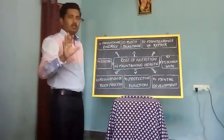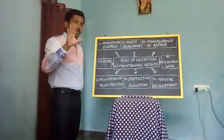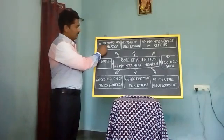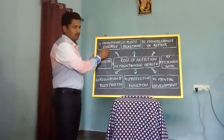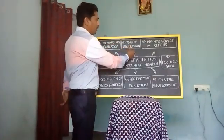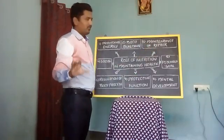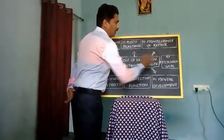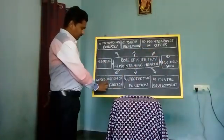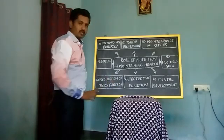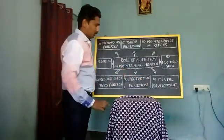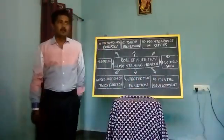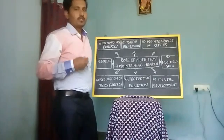Food will perform eight vital functions to maintain our health. These are: first, providing energy; second, body building; third, maintenance and repair; fourth, social function; fifth, psychological function; sixth, regulation of body processes; seventh, protective function; and eighth, mental development. These are the eight vital functions carried out by food within our body.